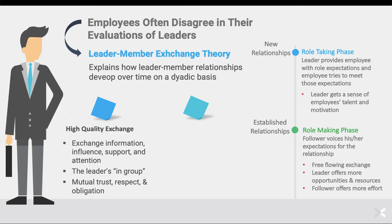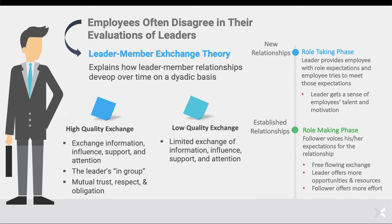Unfortunately, not all relationships are going to be high-quality exchange. There are times when leaders form low-quality exchange relationships with their followers — a limited exchange of information, influence, support, and attention. These individuals might not feel any obligation to one another, and there might not be open, honest dialogue. Maybe the leader doesn't support the employee, or the employee doesn't support the leader's initiatives. These individuals are considered part of the leader's out-group — not in that influential circle — which can have consequences for the employee and the leader.